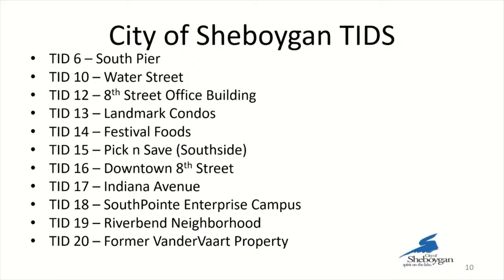TID 19 is the River Bend neighborhood, primarily around the Dulmes Decor area where the Water Street Hotel is being developed, the old Gloss Coffee Shop, and the Lakeshore Technical College campus across the road — a small district on the bend in the river. TID 20 is the former Vandervaart site where Oscar Apartments and QuickTrip are being built.